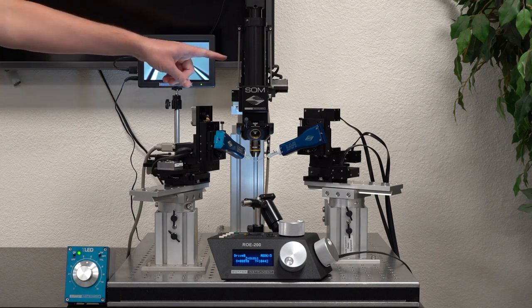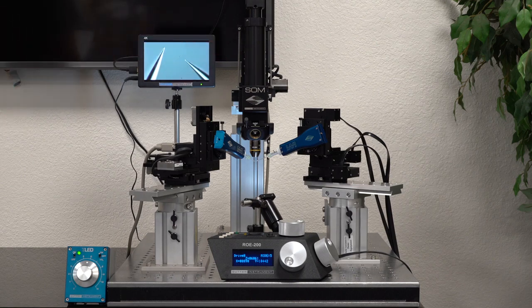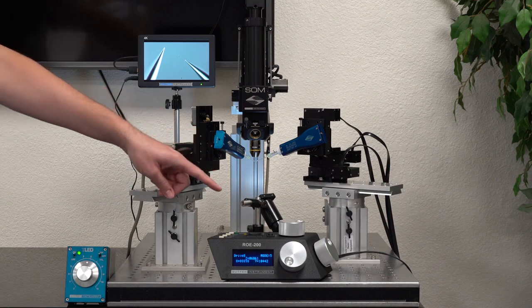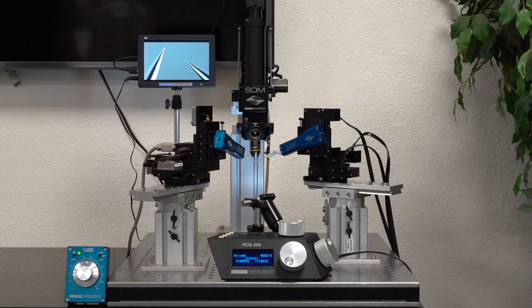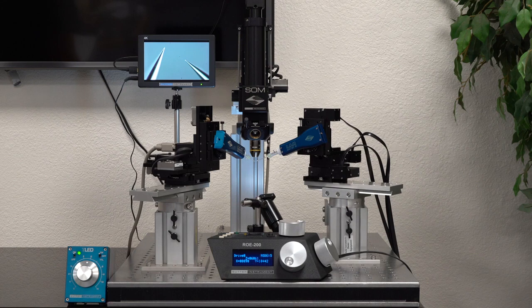With the MP285 mechanical here, the SOM can move the objective 25mm in XYZ using either the manual ROE input device here or via computer commands over USB. The motorized position of the objective allows the specimen to be static.